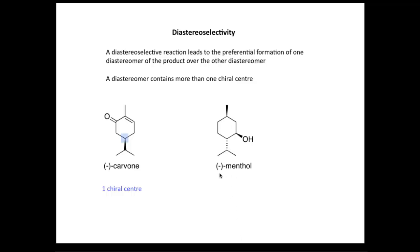If we now look at our second example, minus menthol, and play spot the chiral center, we will see we have one, two, three chiral centers. So we can have diastereoisomers of menthol, and here's an example of one possible diastereoisomer.